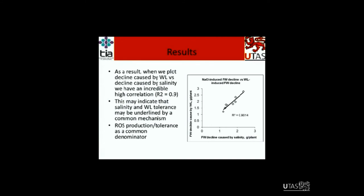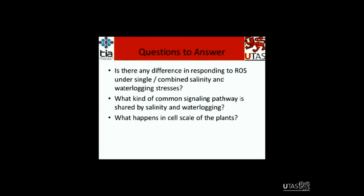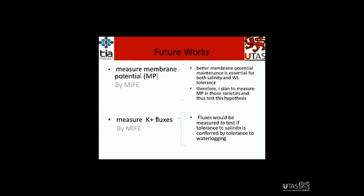This may indicate that salinity and waterlogging tolerance may be underpinned by a common mechanism, and we can think about ROS production or tolerance as a common denominator. In the future, I will address questions such as: is there any difference in responding to ROS under single versus combined salinity and waterlogging stresses? What common signaling pathways are shared by salinity and waterlogging? And what happens at the cell scale in plants? I plan to measure membrane potential, since better membrane potential maintenance is essential for both salinity and waterlogging tolerance, and I will measure it across those varieties to test this hypothesis. I also plan to measure potassium fluxes to test whether tolerance to salinity is confirmed by tolerance to waterlogging as well.